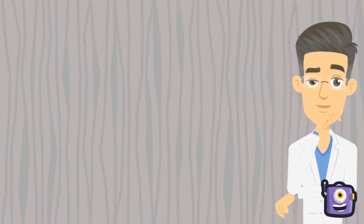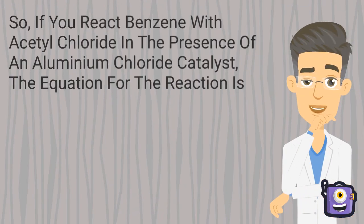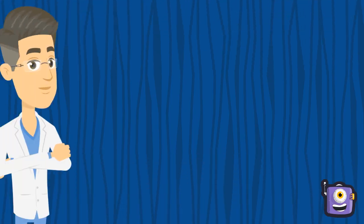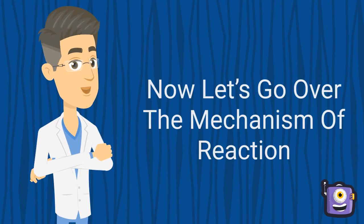So, if you react benzene with acetyl chloride in the presence of an aluminium chloride catalyst, the equation for the reaction is — now let's go over the mechanism of reaction.